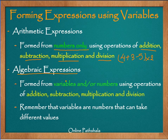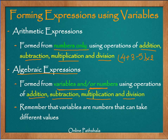Contrast that to an algebraic expression, which is what we are going to study here. The basic difference between arithmetic and algebra is the use of variables in algebra. Algebraic expressions are formed from variables and/or numbers using the four basic operations of addition, subtraction, multiplication and division. You may have fixed numbers in your algebraic expressions or you may not — but variables must be present for it to qualify as an algebraic expression. That is a key difference between arithmetic and algebraic expressions.